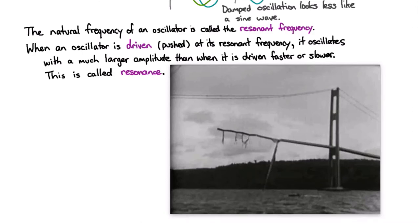How damped an oscillator is is called its quality factor. If you have a really high quality factor oscillator, it tends to have a really low amount of damping and will oscillate very hard. Sometimes you want a really high quality factor, and sometimes — like when you're building buildings — you don't want that; you want a very low quality factor.